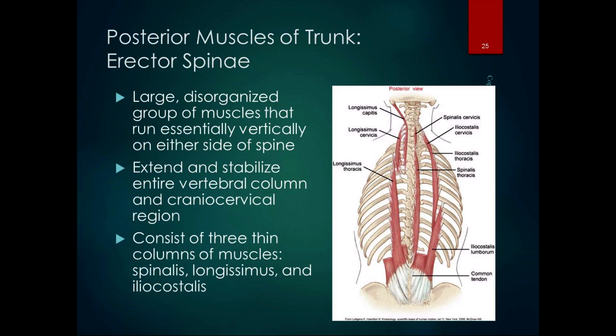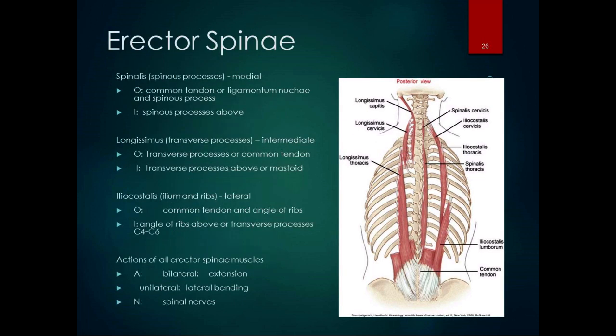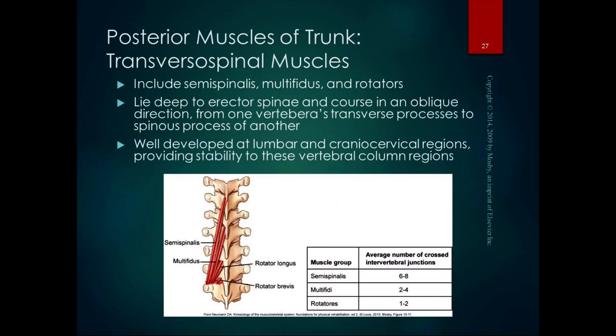The erector spinae are all innervated by dorsal rami of adjacent spinal nerves. You don't need to know individual origins and insertions, just their general actions. These are your trunk extensors, and they act as part of the force couple for anterior pelvic tilt between the trunk extensors and the hip flexors. The erector spinae are the most superficial of the trunk extensors.